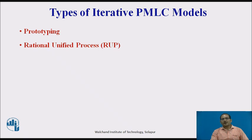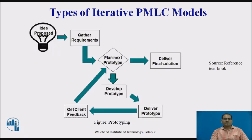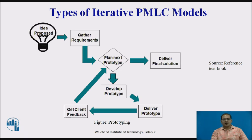The types of Iterative PMLC Models are mainly prototyping and the Rational Unified Process. In the prototyping model, requirements are gathered from the client, a prototype is developed and delivered to the customer, feedback is taken from the client, and a plan for the next prototype is developed. Once the iteration is completed, the final solution is delivered for the project.